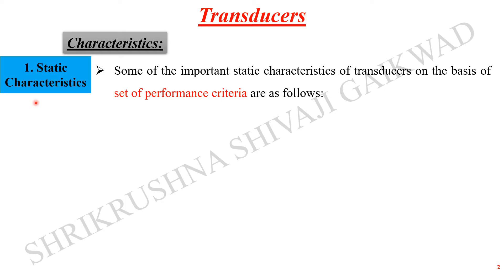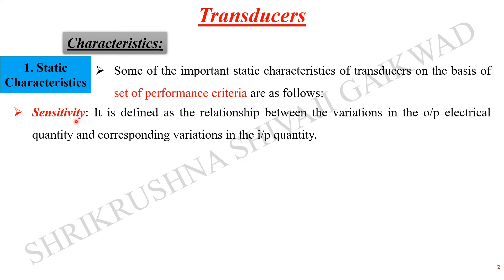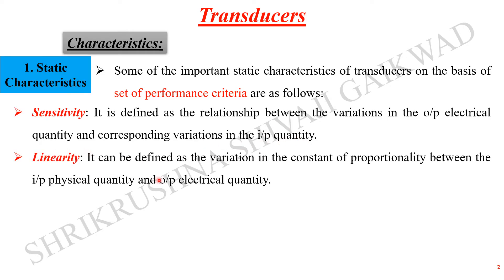Let's elaborate on the static and dynamic characteristics in more detail and understand the terminologies that fall under each. The first static characteristic of the transducer is sensitivity. It is defined as the relationship between the variation in the output electrical quantity and the corresponding variation in the input quantity. This decides how sensitive our instrument is — when we change the input, how easily the output gets changed.